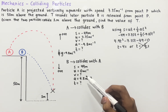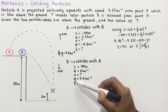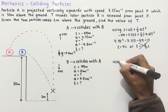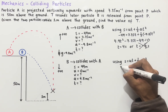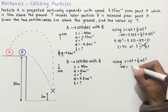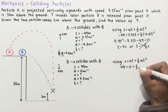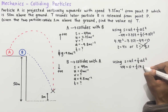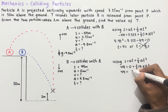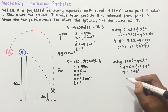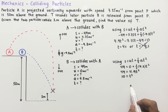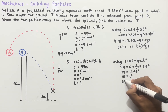Working out the time for particle B's journey: we have S, U, and A known, so we use S equals UT plus one-half AT squared. Substituting: 49 equals 0 times T plus one-half times 9.8 times T squared, which simplifies to 49 equals 4.9T squared. Dividing both sides by 4.9 gives T squared equals 10. Taking the square root of both sides gives T equals root 10 seconds.